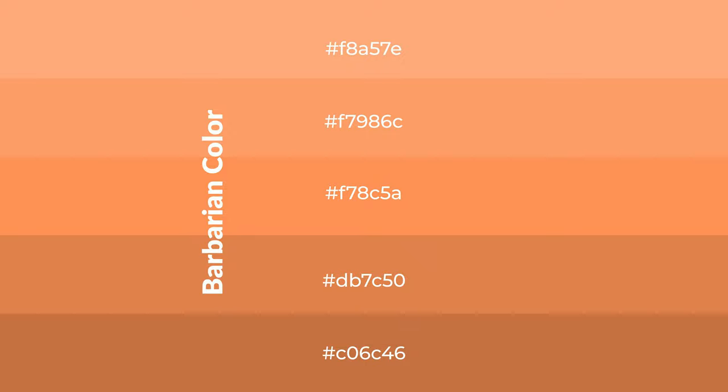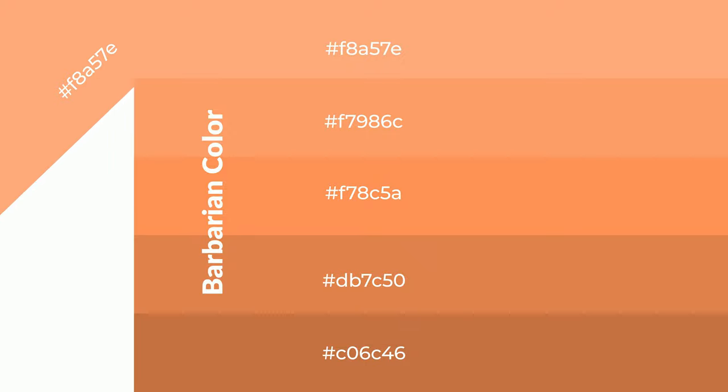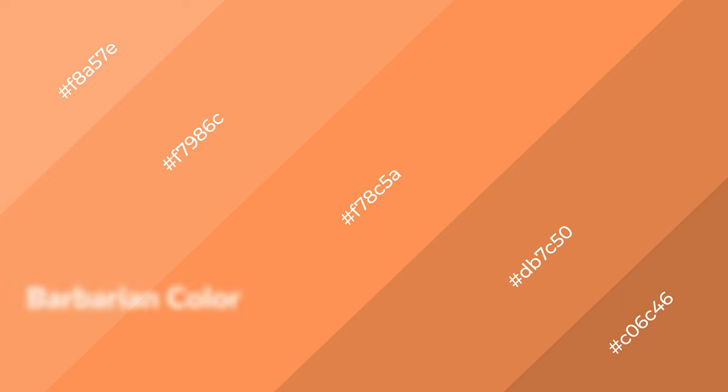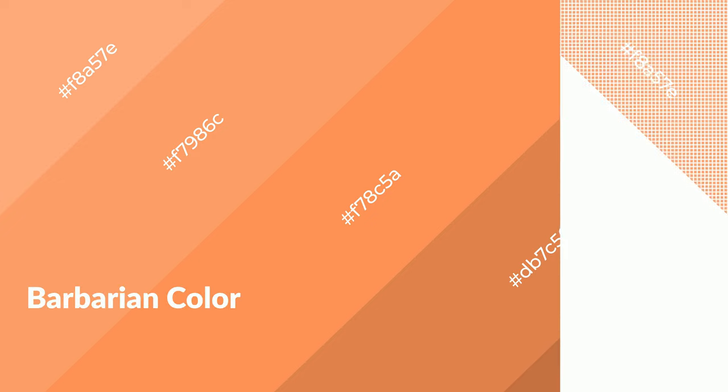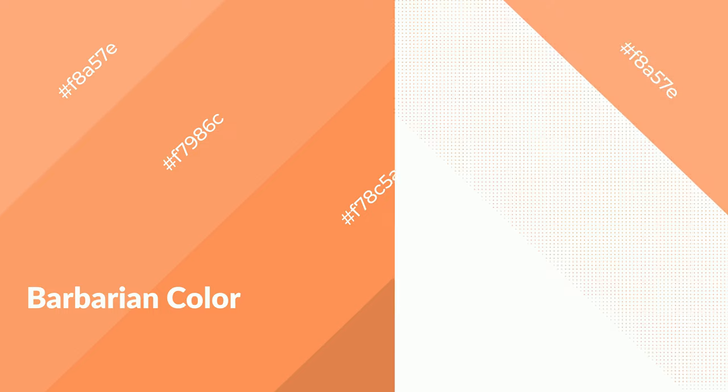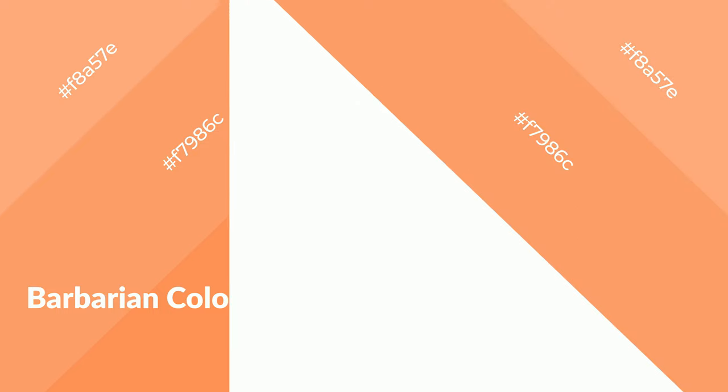To generate shades of a color, we add black to the color. Shades are used in patterns, 3D effects, and layers. Shades create depth and drama. Barbarian is a warm color and it emits cozier and active emotions. Warm colors are symbols of warmth, fire, heat, and sunshine.